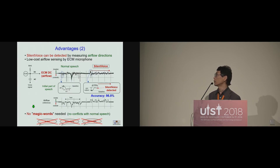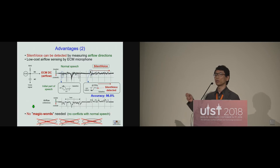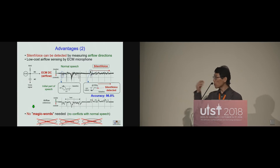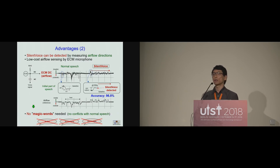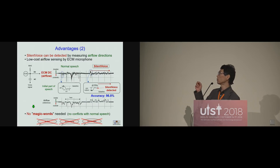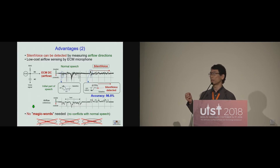The second advantage is for activation. Currently, we have to use a so-called magic word for activating voice assistants. In silent voice, the input can easily be separated from normal conversation just by measuring airflow direction. An airflow sensor can be used, but it's a bit expensive. We also found that a conventional ECM — electric condenser microphone — can be used as an airflow sensor by just measuring the DC level of the microphone output. It's very cheap. Therefore, we can use the voice assistant without shouting any magic words.